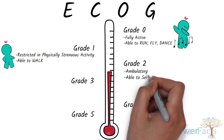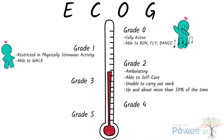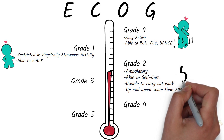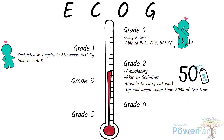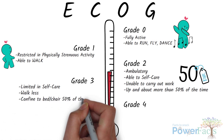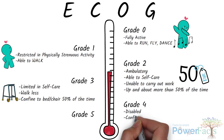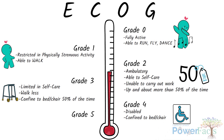Grade 2: the patient is still ambulatory, capable of all self-care but unable to carry out any work activities, and can be up and about more than 50% of waking hours. Grade 3: the patient is limited in self-care, no longer able to walk as much, and is mostly confined to bed or chair more than 50% of the time. Grade 4: the patient is completely disabled and totally confined to bed or chair. Grade 5 is where the patient is dead.